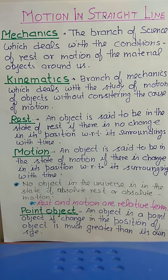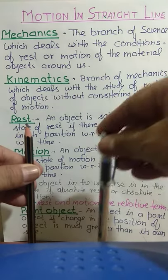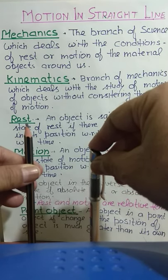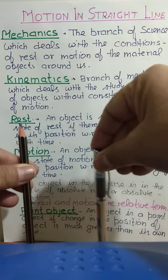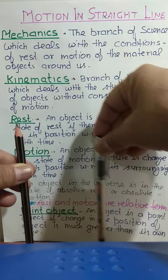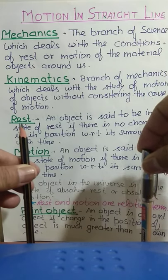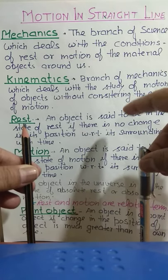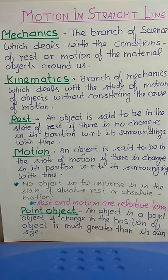On the other hand, if we discuss motion: again the pencil is the reference point and the pen is the object. If the object moves away from or towards the pencil, or moves in angular motion on a circular path, then this object — the pen — will be considered in the state of motion. Therefore, an object is said to be in the state of motion if there is a change in its position with respect to its surroundings with time.